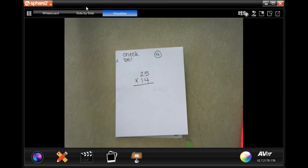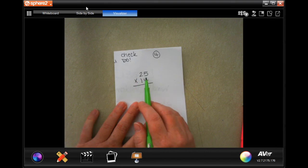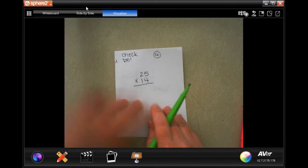Number 4 says, Desiree swims laps for 25 minutes each day. How many minutes has she spent swimming laps in 14 days? So, 25 minutes in 1 day. She did it for 14 days. Let's multiply.